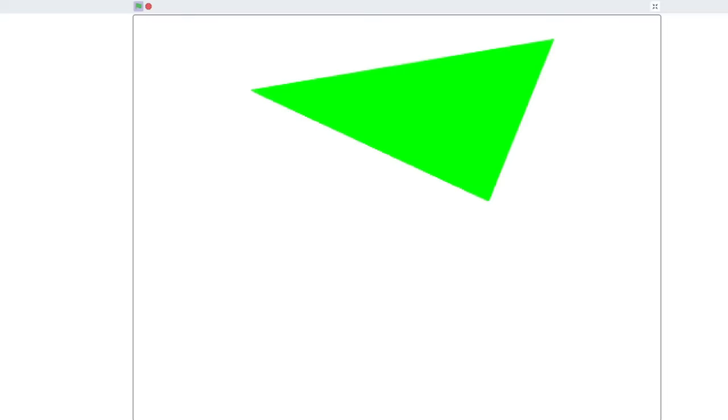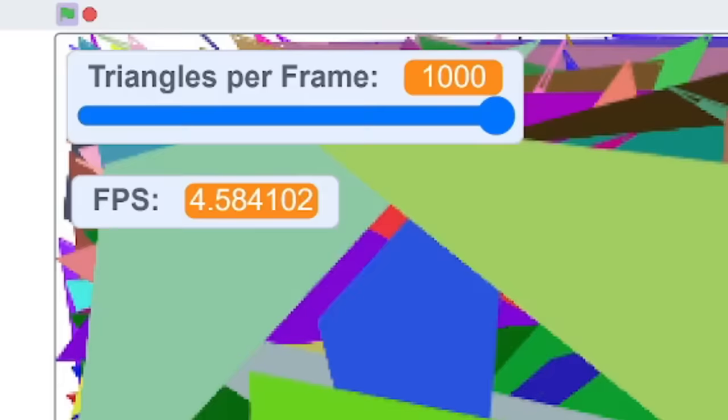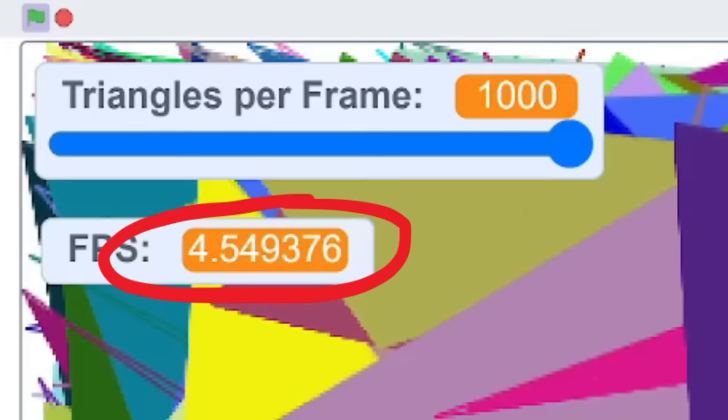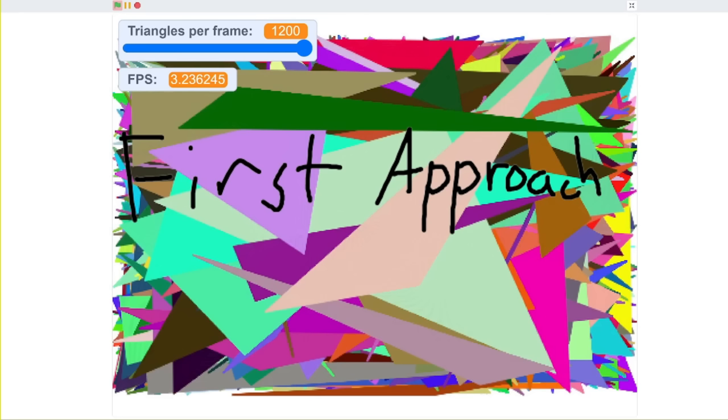This triangle drawer can draw any triangle with any color. After running an FPS test, we can see that it runs 1000 triangles per frame at about 5 frames per second. This is better than the first approach even in TurboWarp, and this new drawer in TurboWarp can run 1000 triangles at 100 FPS. Very cool.